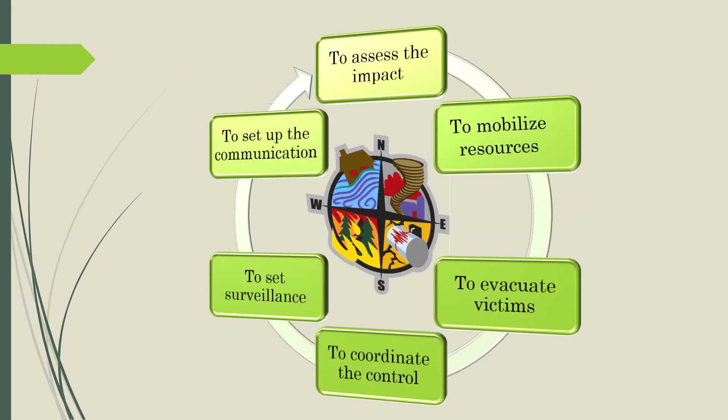If a natural disaster occurs, you have to follow the rules. First, assess the impact. Second, mobilize resources. Third, evacuate victims. Fourth, coordinate the control. Fifth, set surveillance. Sixth, set up the communication.